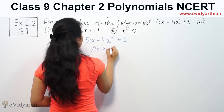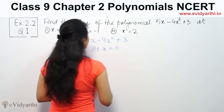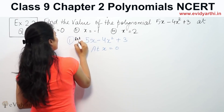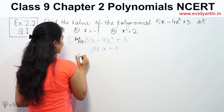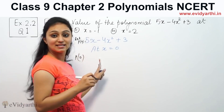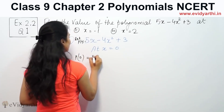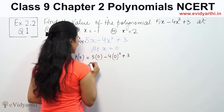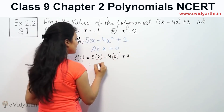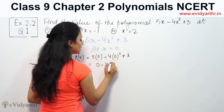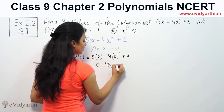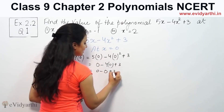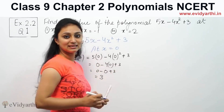Find the value at x equals 0. So this will be 5 times 0, minus 4 times 0 squared, plus 3. So 5 into 0 is 0, 4 times 0 squared is 0, plus 3. So 0 minus 0 plus 3. The answer is 3.